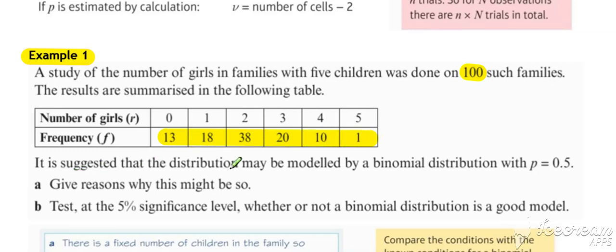It's suggested that distribution may be modeled by a binomial distribution with p-value of 0.5. So known p-value, be aware of that. So we need to use our binomial to work out what our expected frequencies should be.